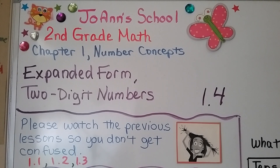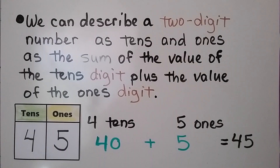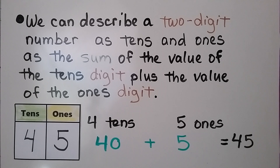Lesson 1.4: Expanded Form Two-Digit Numbers. We can describe a two-digit number as tens and ones — as the sum of the value of the tens digit plus the value of the ones digit.